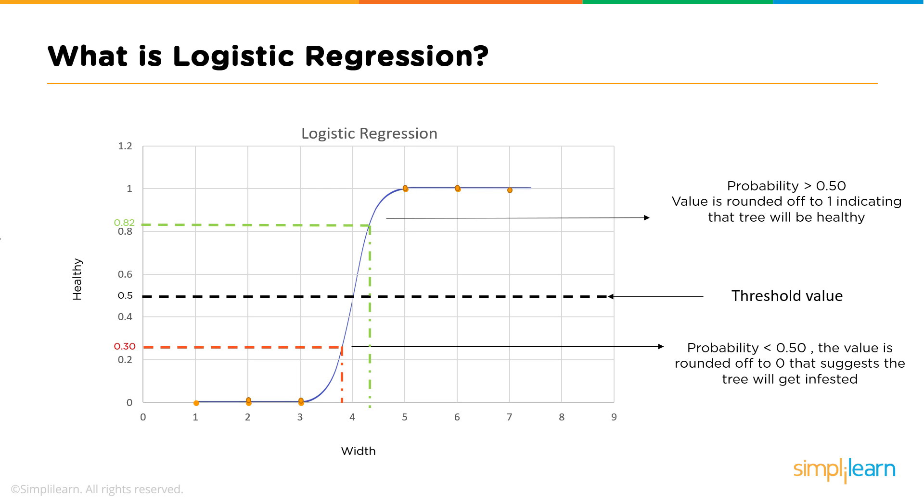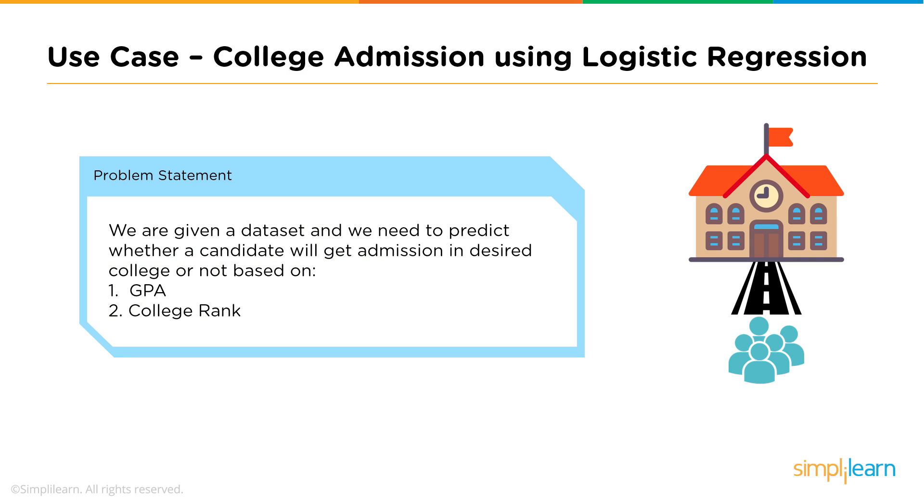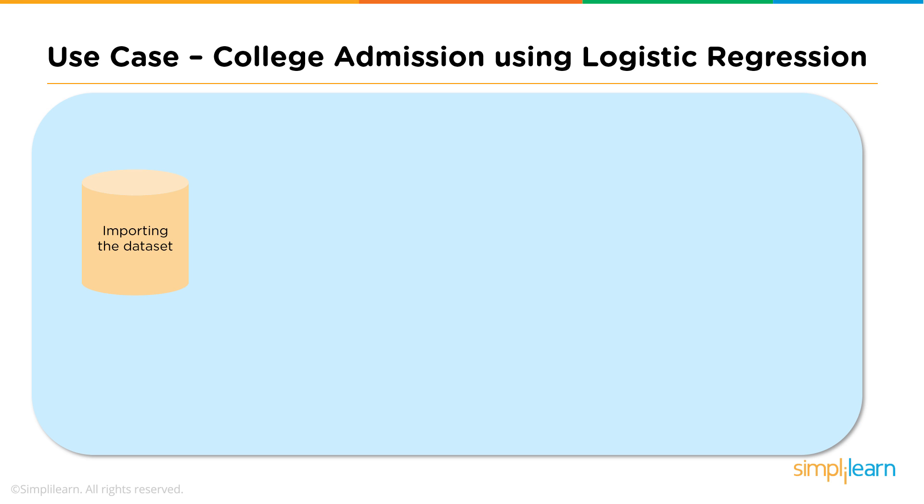Once again, we plot our sigmoid curve. And once our sigmoid curve is plotted and our threshold is set almost always at 50%, we can use the sigmoid curve and calculate the probabilities and hear the independent variable of width, which I assume is an application of pesticides or no pesticides, to determine whether or not the probability of healthy is greater than 50% the threshold or less than 50% the threshold. And now let's take a use case of a college admission problem. Of course, we can't solve anything using data science if we don't know what the problem is. So we need a problem statement. And here the problem statement is simple. We are given a data set and we need to predict whether a candidate will get admission in a desired college or not based on their GPA and college rank.